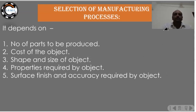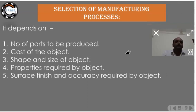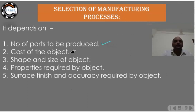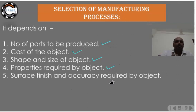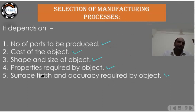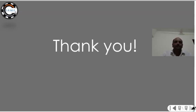The selection of a manufacturing process depends on several factors: number of parts — whether it is mass production or batch production; cost of the object; size and shape of the object; properties such as surface finish and accuracy required — GD&T, and whether parts need to fit in an assembly; and the surface finish and accuracy required for the object.